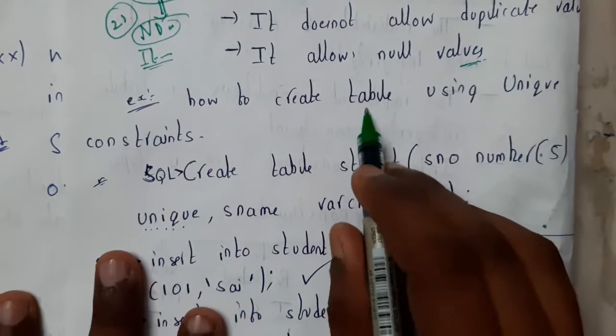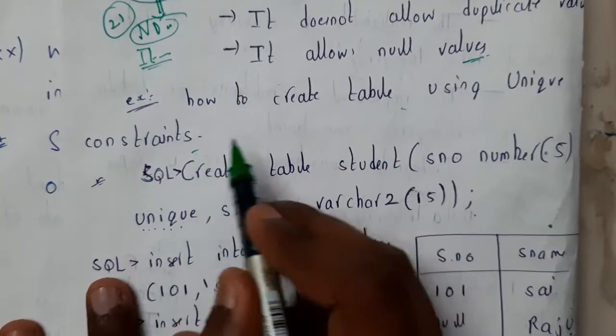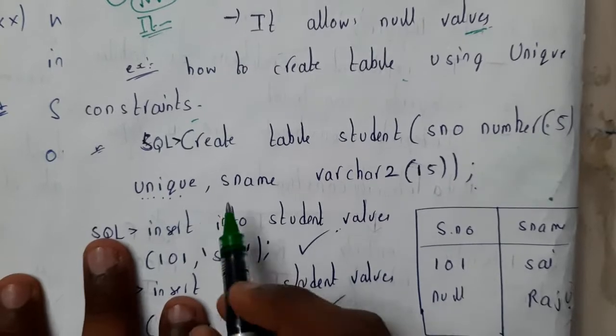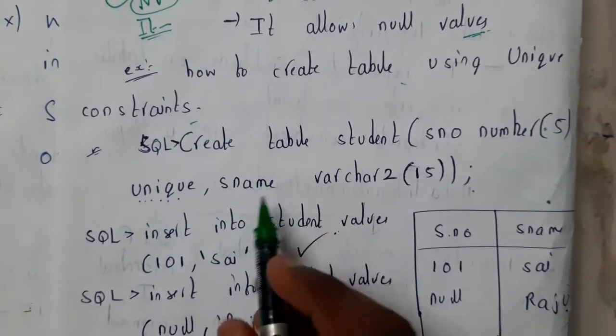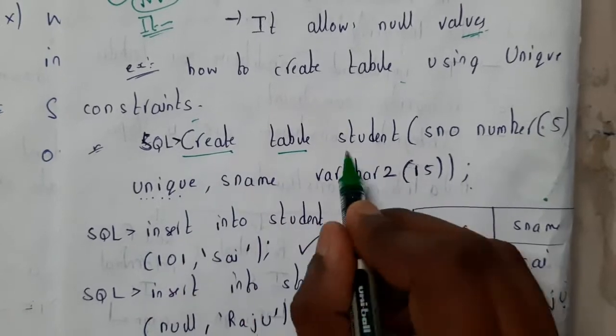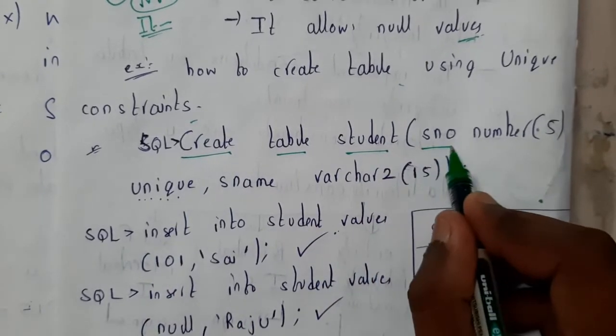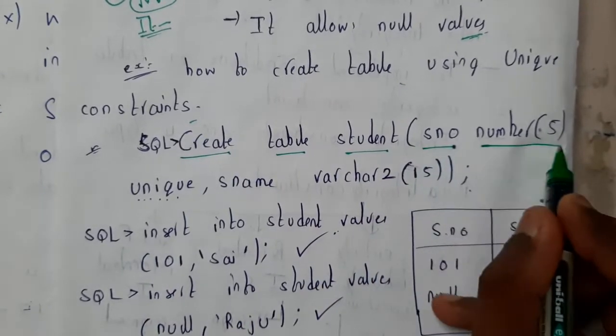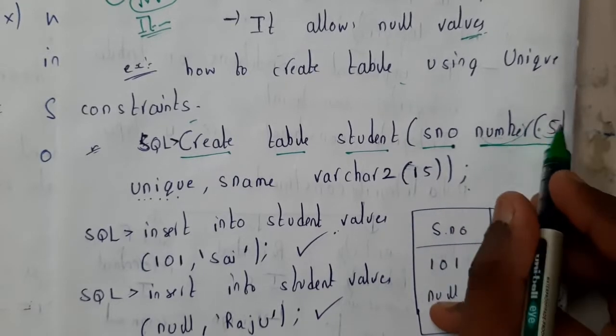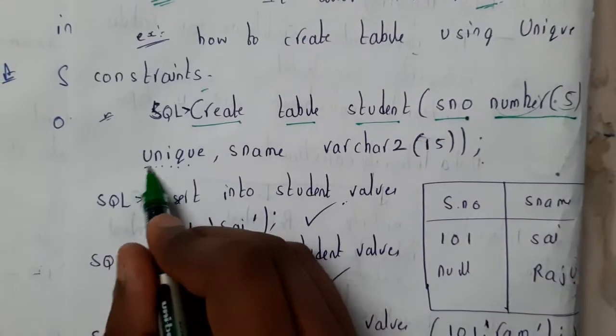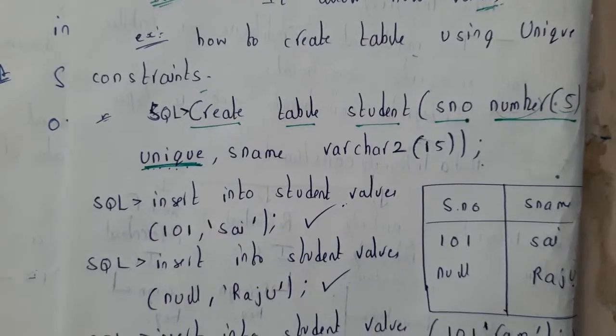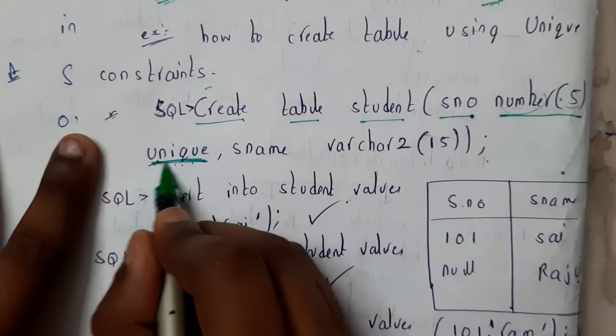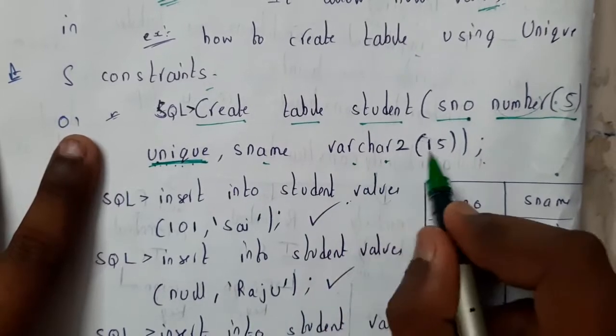Let's take a small example of how to create a table using unique constraint. Assume a table having student information. Create table: s_number column with number datatype and size 5. After that, you'll be implementing the unique constraint: s_name varchar2(15) unique. You can write unique there also, but you should have some common sense while writing these things.